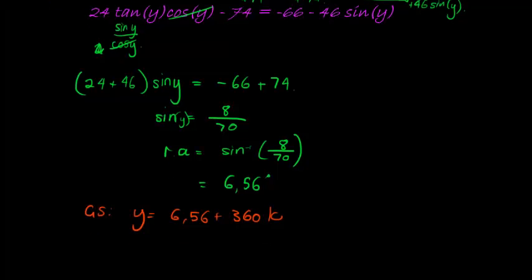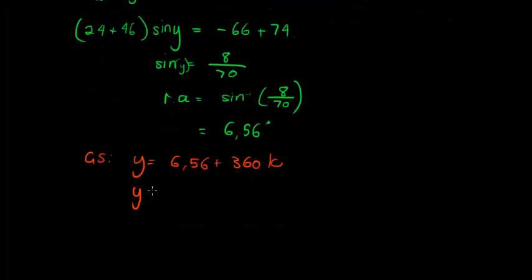That's the one solution, or the other solution is 180 minus that, so that gives me 173.44 plus 360 times k, where in both cases, k is an element of integers.